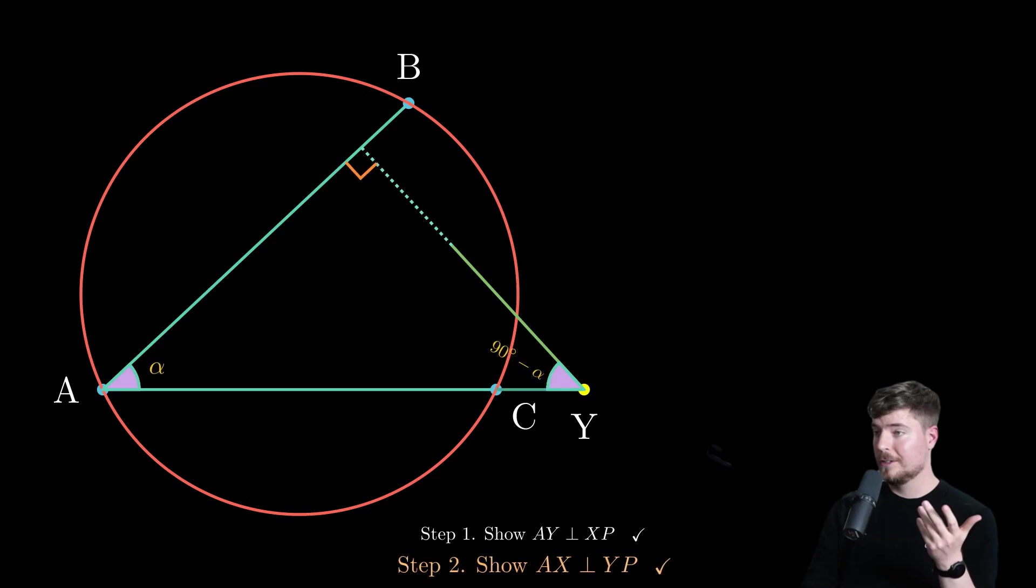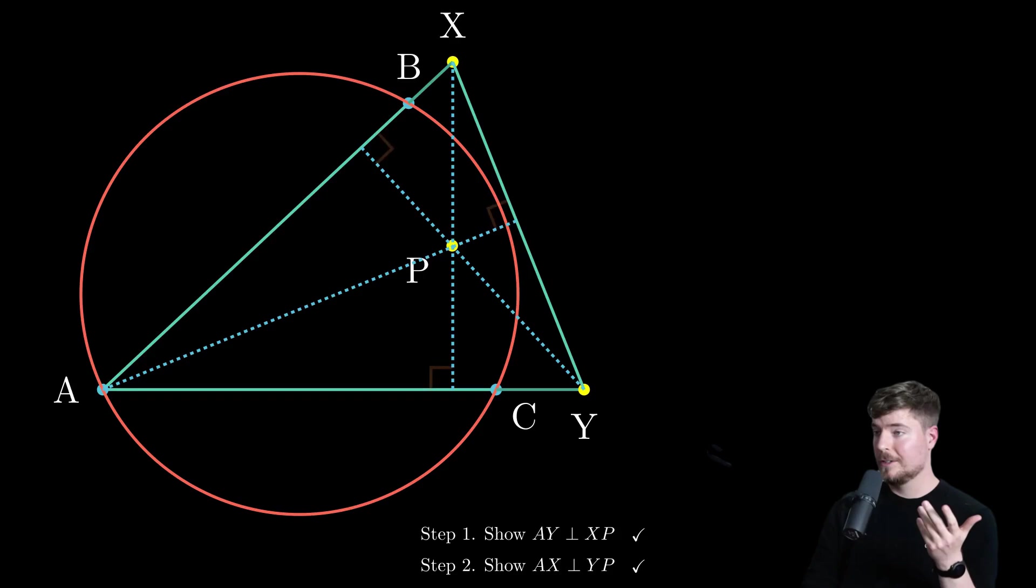And there you have it. By proving those two key moves, we've shown that P is the orthocenter of triangle AXY. It's like nailing the perfect trick shot in pool. Everything lines up and bam, you've got it.